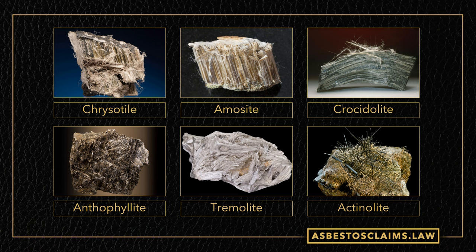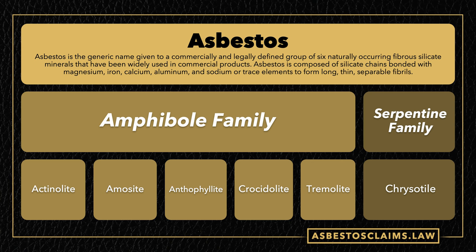Let's really get a good idea of what asbestos is. Asbestos is a term used by industry to describe six different minerals that all have properties which make them useful to industry. These six minerals are related but they're classified under two different families: we have the amphibole family, which includes actinolite, amicite, anthophyllite, chrysidolite, and tremolite.